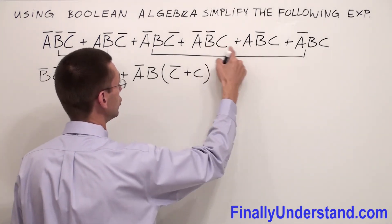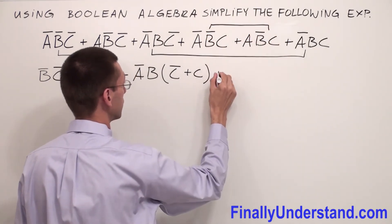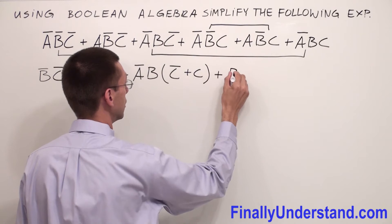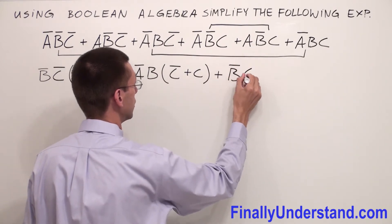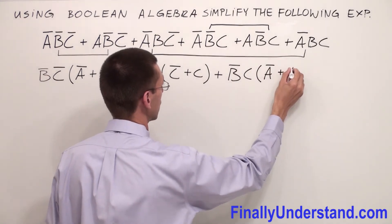From these two terms I'm going to factorize B̄C̄. Inside of the parentheses I'm going to have A plus Ā.